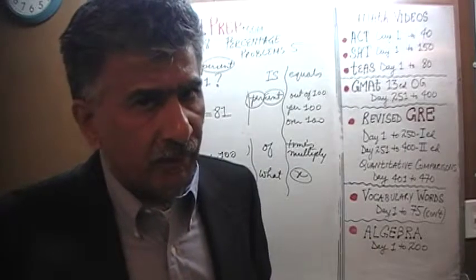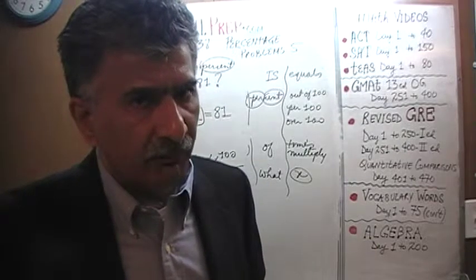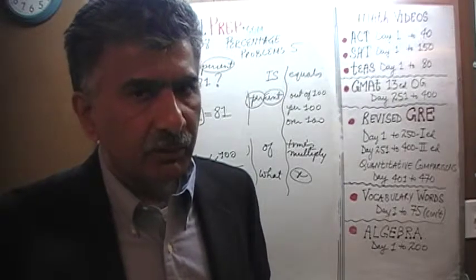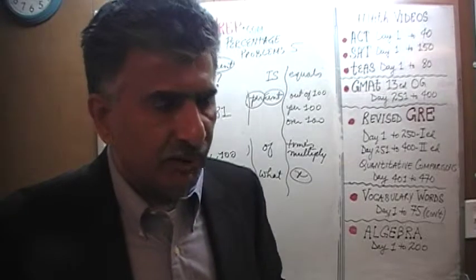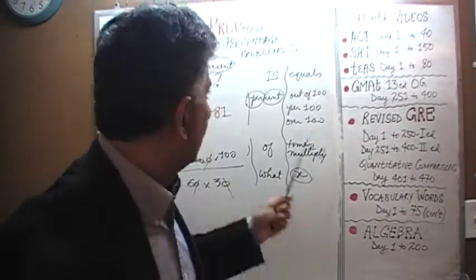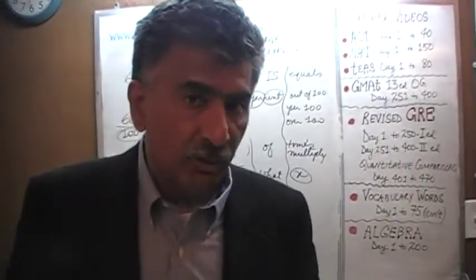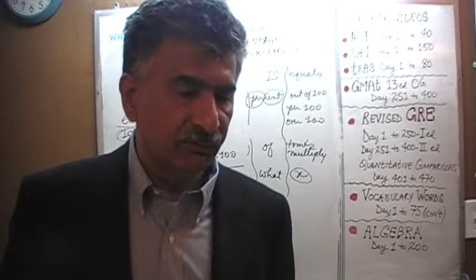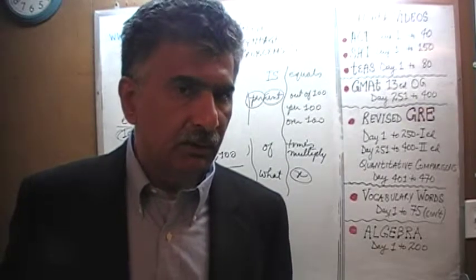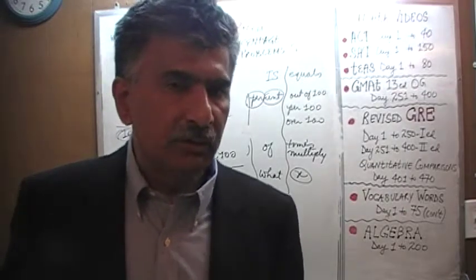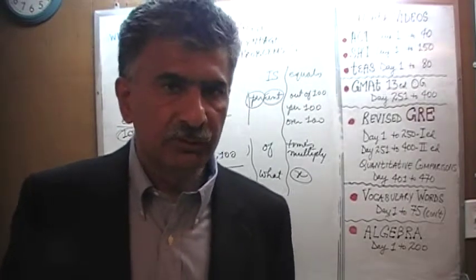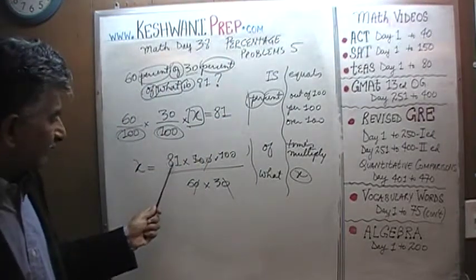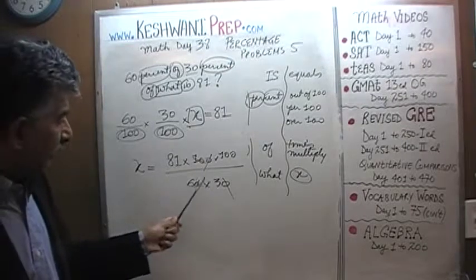We learned this before — it's important that you watch all the videos in proper sequence. The divisibility rule for 3: if the sum of the digits is divisible by 3, then the number itself is divisible by 3. For 81: 8 plus 1 is 9, and since 9 is divisible by 3, we can divide top and bottom by 3.